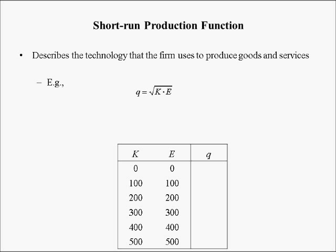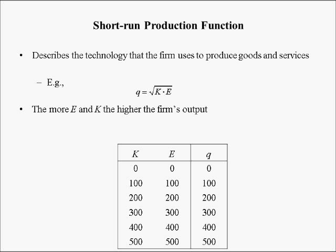In the table below, we're demonstrating that generally speaking, the more capital and employees a firm has, the more output it can produce. When capital and employees are zero, output is zero. Plugging in 100 for capital and 100 for employees gives the square root of 100×100, which is 100. 200 times 200 gives 200, and so on.